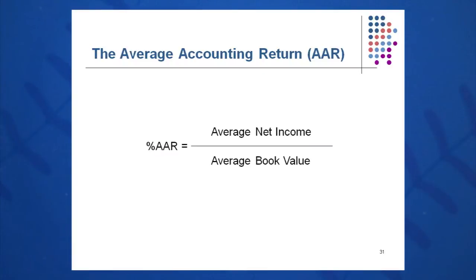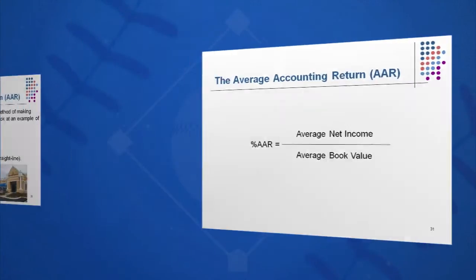AAR is simply average net income divided by average book value. From the income statement, I get the average net income over five years, and on the balance sheet — the projected balance sheet for this project — I will get the average book value.